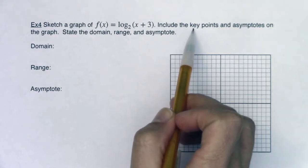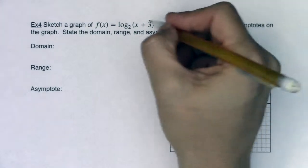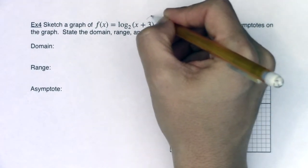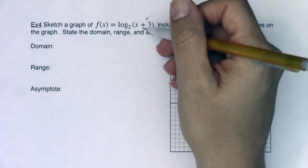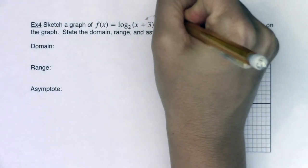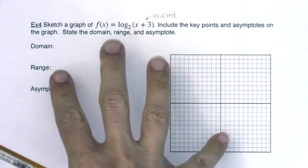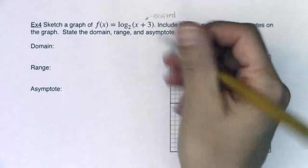We're going to include key points and asymptotes on the graph and state the domain, range, and the asymptote. Now just taking a look at this argument, this graph is shifted 3 units left from the graph in example 3. So I just want to take note that we graphed log base 2 of x in example 3 and now we're shifting it 3 units left.